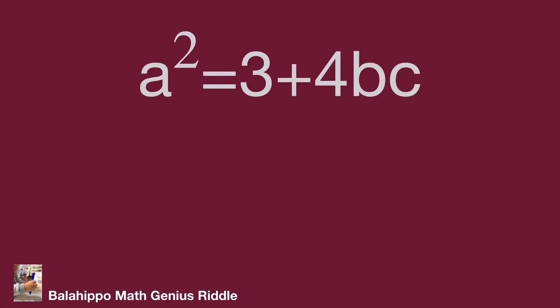Back to the given equation: a squared equals 3 plus 4bc. bc times 4 is an even number, and 3 is an odd number. So 3 plus 4bc becomes an odd number. This means a squared is an odd number, so a is an odd number.